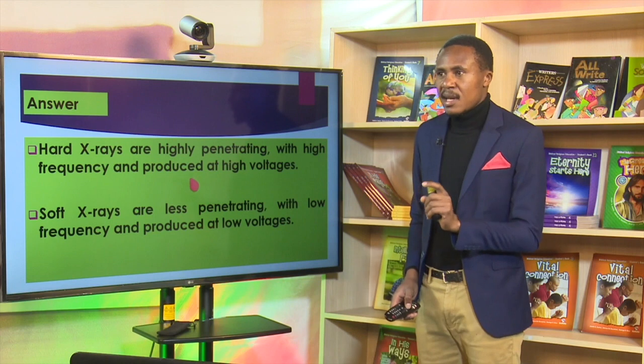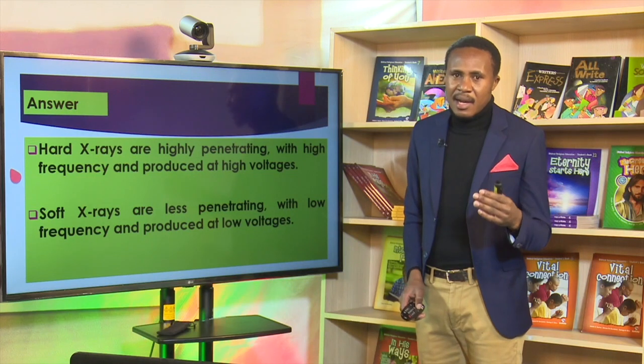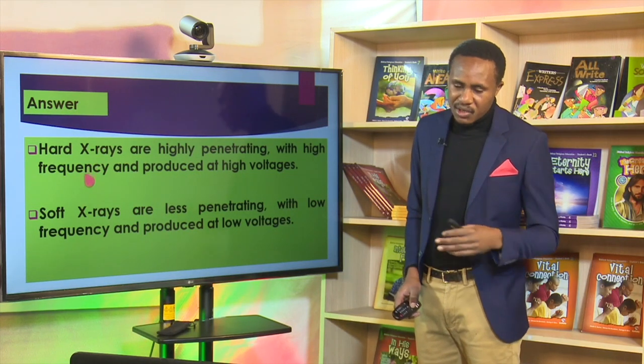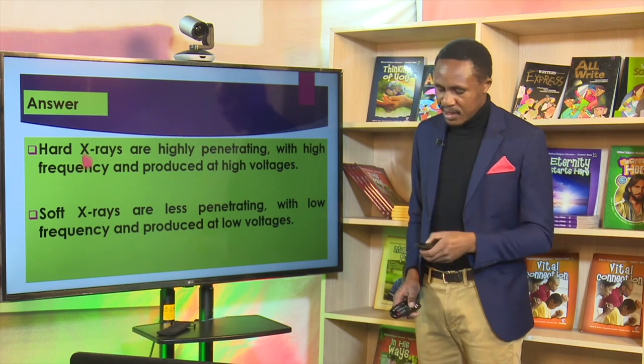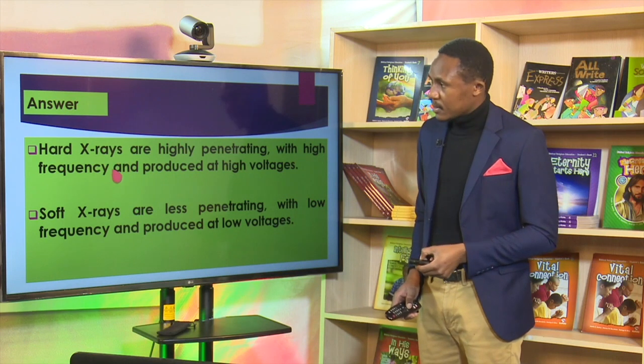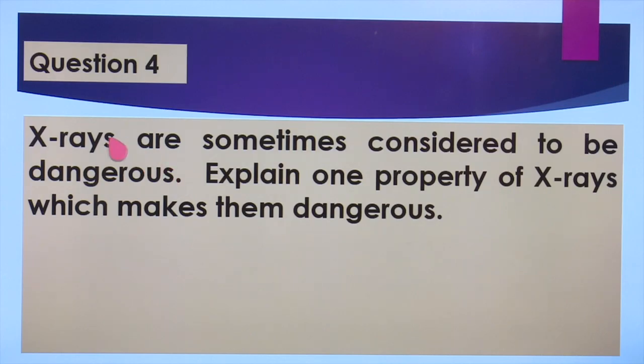Hard X-rays have a short wavelength, while soft X-rays have longer wavelengths. We can adjust the penetrating power of X-rays by adjusting the accelerating potential — in essence, when we adjust the potential we get either hard or soft X-rays. When the potential increases we get hard X-rays; when it reduces we get soft X-rays. This is a question you are likely to encounter.